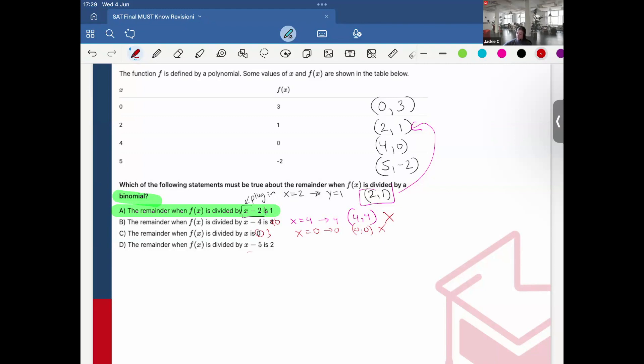for this to be correct it would be negative 2. And therefore, the only one that's viable is option A.